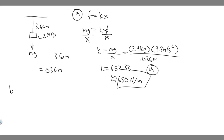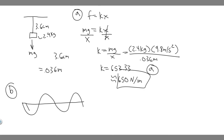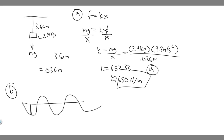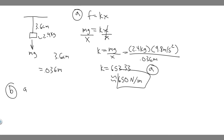Now let's do Part B, which asks for two things: the amplitude and the frequency of oscillation. Starting with amplitude — if you imagine this like a wave, we're pulling the fish down, and the farthest it goes down is 2.5 centimeters. That distance from the equilibrium point to the bottom is the amplitude. So the amplitude is simply 2.5 centimeters.